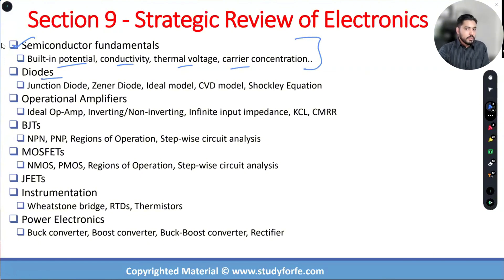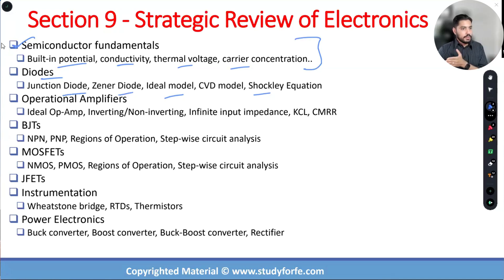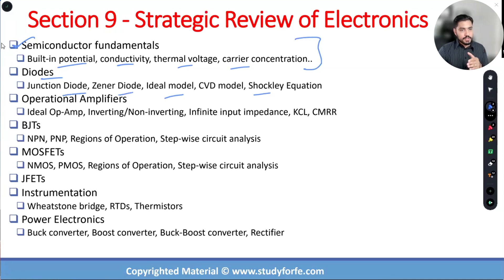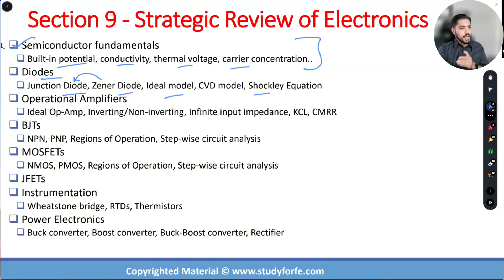Diodes. In the reference handbook, they talk about the junction diode, the Zener diode, the ideal model, and the Shockley equation. For a straightforward topic like diodes, all these different categories can create unique scenarios, questions, and problems. You need a very good understanding of what forward biasing means for a diode, what reverse biasing means, how a Zener diode is different from a junction diode, what is the typical mode of operation for a Zener diode — reverse biasing and voltage clamping.